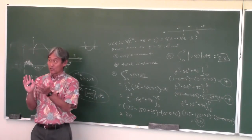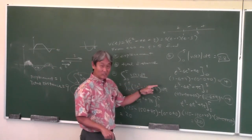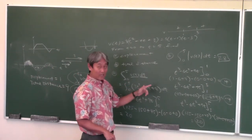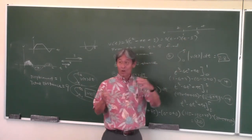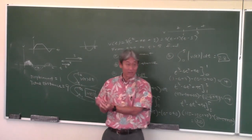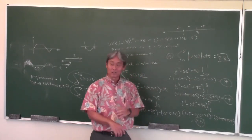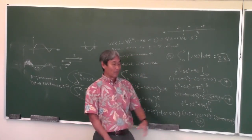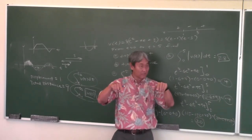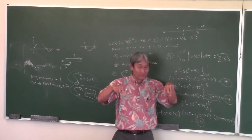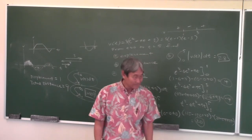So tonight's homework — when you don't have a calculator, this is what you have to do. You've got to figure out when the velocity is positive and negative and do separate integrals. Of course, if you have a calculator, you can just punch in the integral with the absolute value directly.